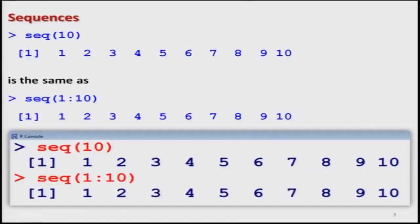For the first example, suppose I want to generate 10 values starting from 1 to 10. One shortcut method or default syntax of the sequence is that if I write seq(10) inside the bracket, this will give me 10 values by the default increment of 1. And if you try it, you get 1, 2, 3, 4 up to 10 — these are the 10 values.